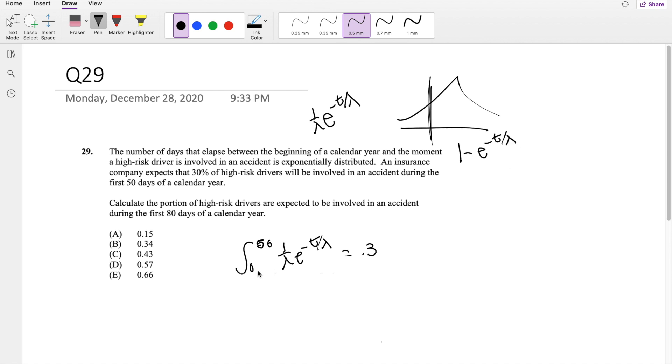So if it's going from 0 to 50, we know that this is equal to 1 - e^(-50/λ). And they expect this probability to be 0.3.